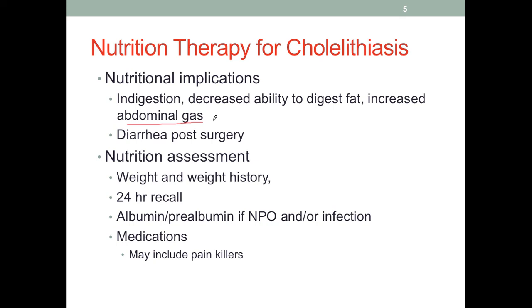Diarrhea is also common, especially for people who have had surgery. When assessing people with gallstones, we must check weight and weight history and conduct a routine 24-hour recall. If a patient has an infection or is on NPO, we should check albumin and prealbumin levels. We also need to know any medications taken by the patient — these could target the gallstone itself or manage symptoms such as pain. Painkillers can cause decreased GI motility, so we may see nutrient-medication interactions we should note.